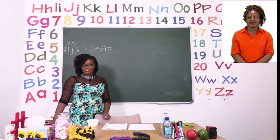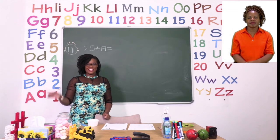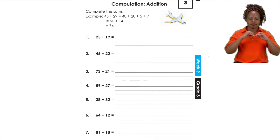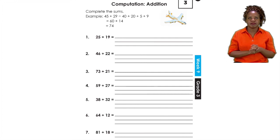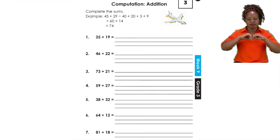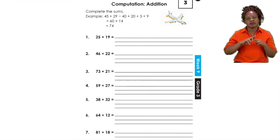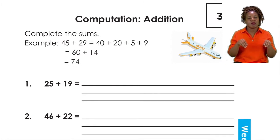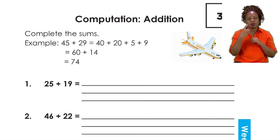For our last exercise, boys and girls, let's go to page 11. On page 11, we are going to do some computation — adding — and we're going to do it by decomposing using our tens and units. The example they have given you there is going to be your guideline, but just in case, let us do number one together. Number one says 25 plus 19 equals. So first of all, we need to break it down to get our answer.